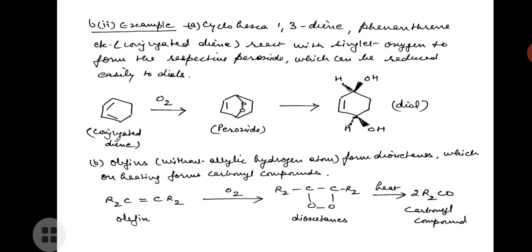Today we studied photo oxidation reactions. In that, we discussed two types: oxidative coupling of aromatic compounds and formation of peroxy compounds. This completes your types of photochemical reactions. Earlier we had already studied four different types: photo addition, photo reduction, and photo isomerization. Thank you so much.